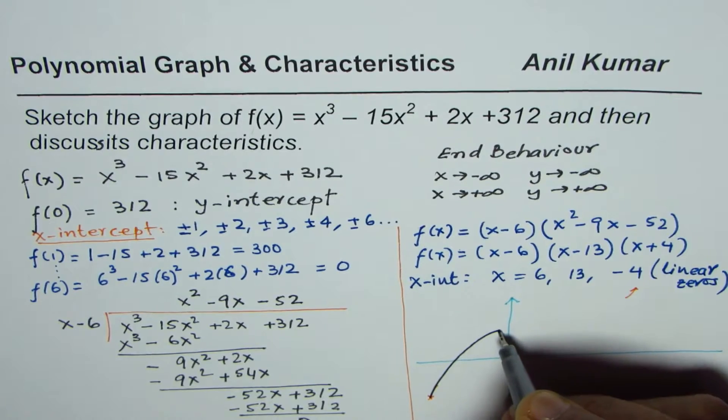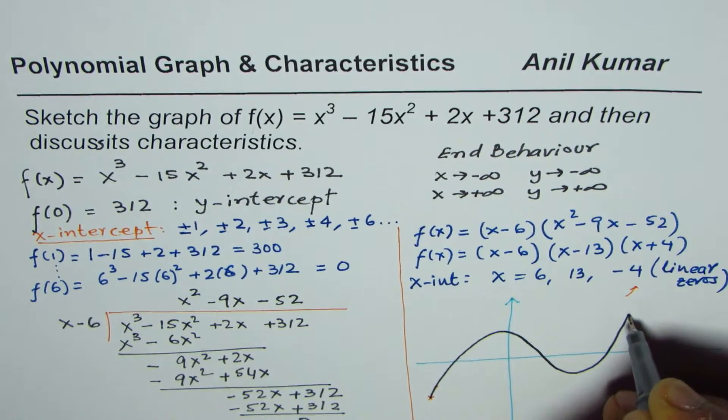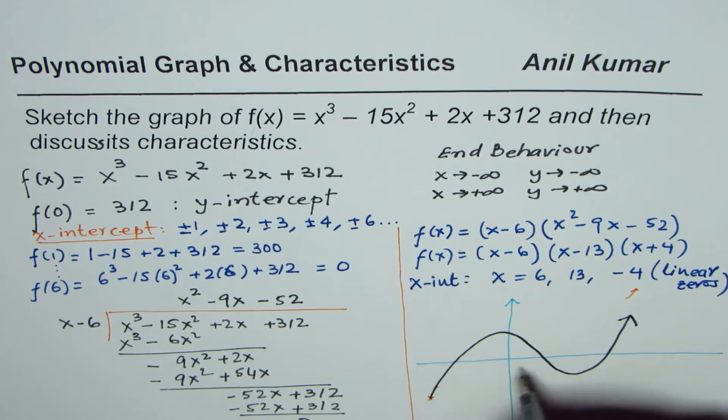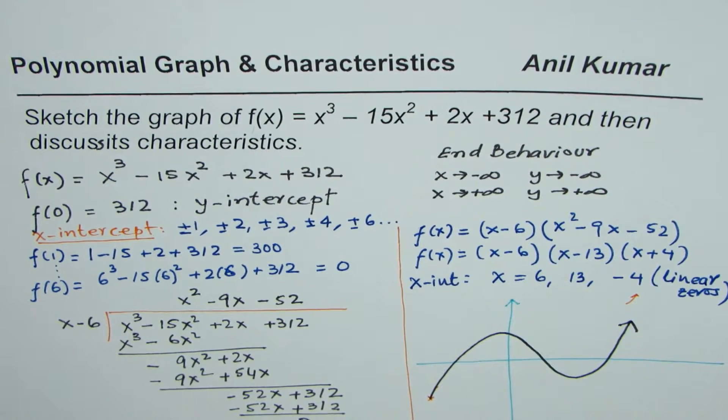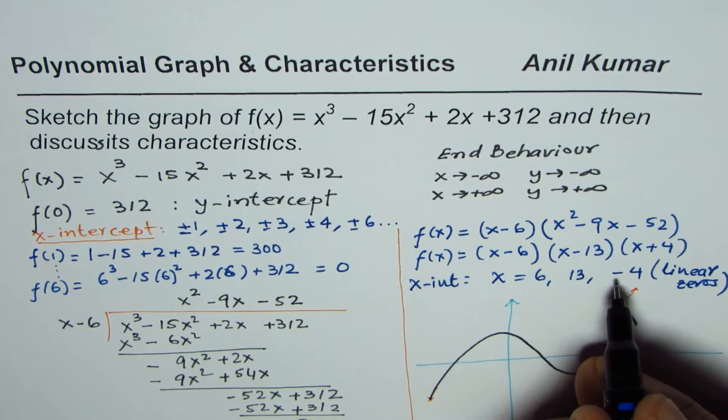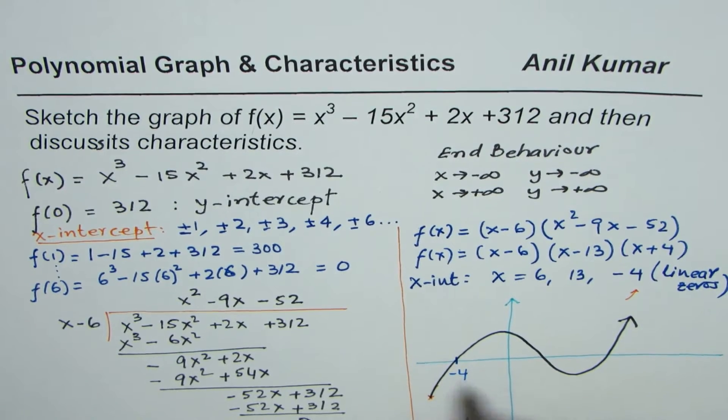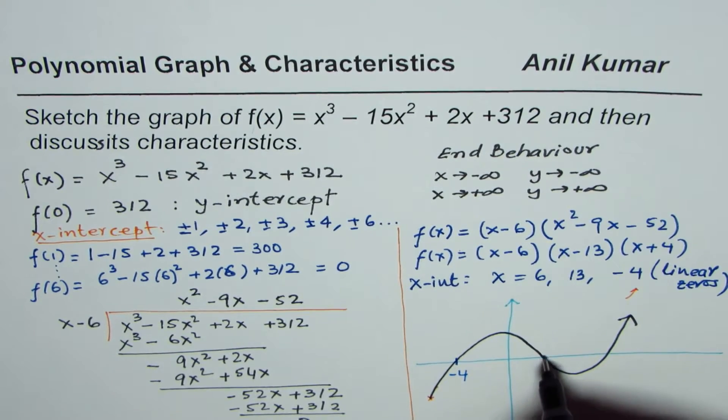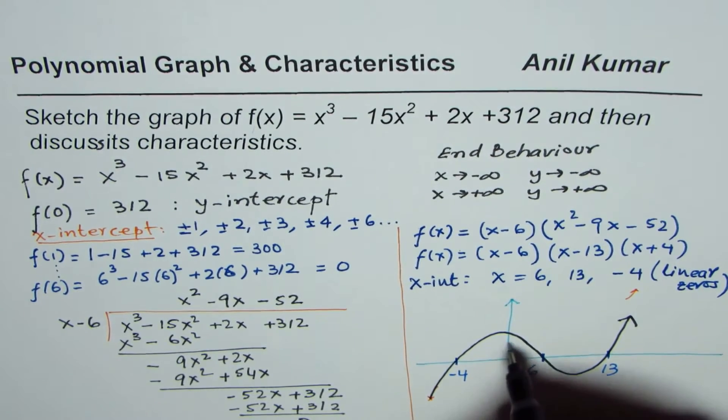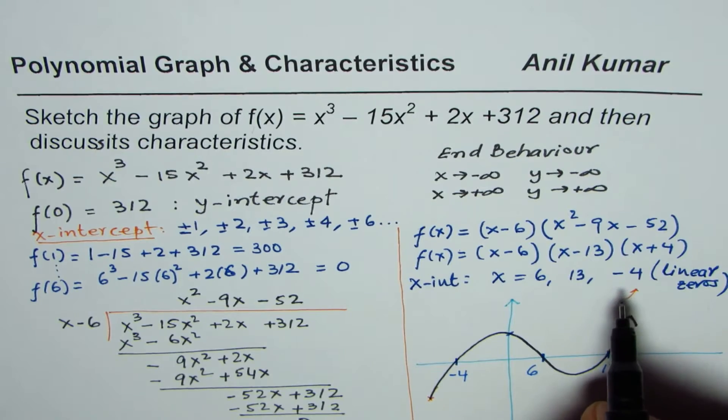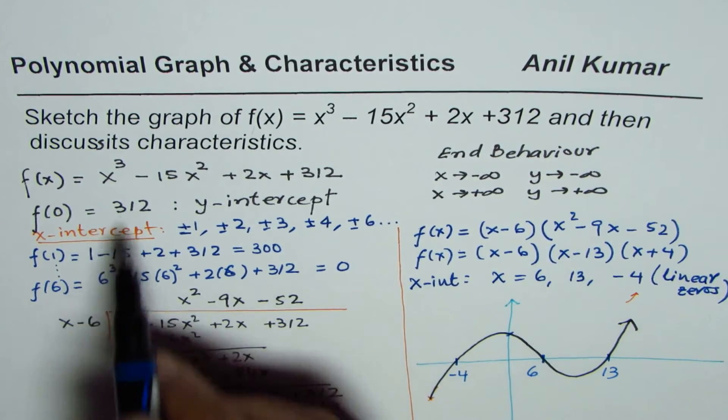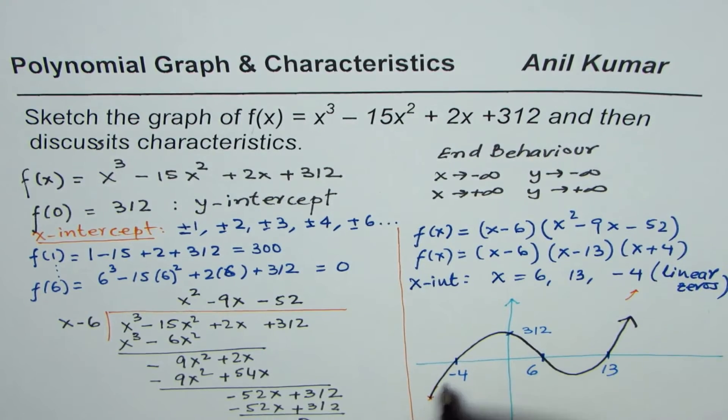So I will quickly sketch the graph. It is kind of like this. It doesn't look like the scale is way off. Anyway, when we write down the values, it becomes even better. So the x-intercepts, this is -4. I'll recommend to do it on a graph paper. First x-intercept on the right side of 0 is 6. Then the other one is at 13. And this is the y-intercept, which will be at 312. So that is the kind of graph which we have.